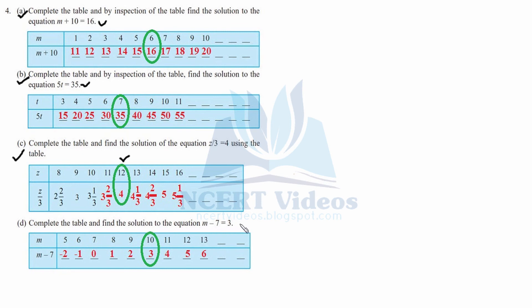For part d: complete the table and find the solution to m minus 7 equal to 3. Placing 5: 5 minus 7 is minus 2, not equal to 3. Placing 6: 6 minus 7 is minus 1, not equal to 3. Placing 7: 7 minus 7 is 0. Placing 8: 8 minus 7 is 1. Placing 9: similarly not equal. But placing 10: 10 minus 7 is 3 — therefore m equal to 10 is the solution.